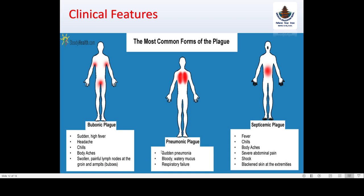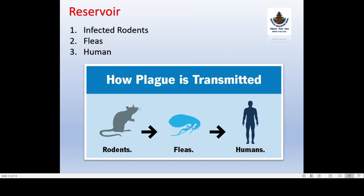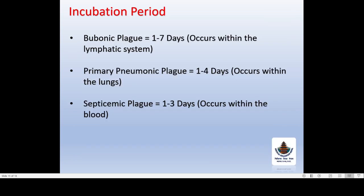For pneumonic plague, sudden pneumonia occurs with bloody watery sputum and respiratory failure. For septicemic plague, there is fever, chills, body aches, and severe abdominal pain. The mode of transmission is the bite of an infected rat flea and droplet infection — inhalation of respiratory droplets from a pneumonic plague patient. Reservoirs include infected rodents, fleas, and humans. Incubation periods: bubonic plague is 1 to 7 days and occurs within the lymphatic system; primary pneumonic plague is 1 to 4 days and occurs within the lungs; septicemic plague is 1 to 3 days and occurs within the blood.